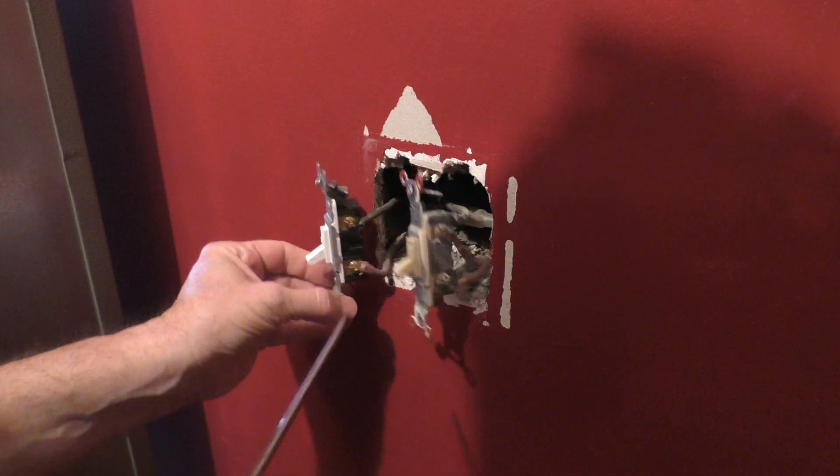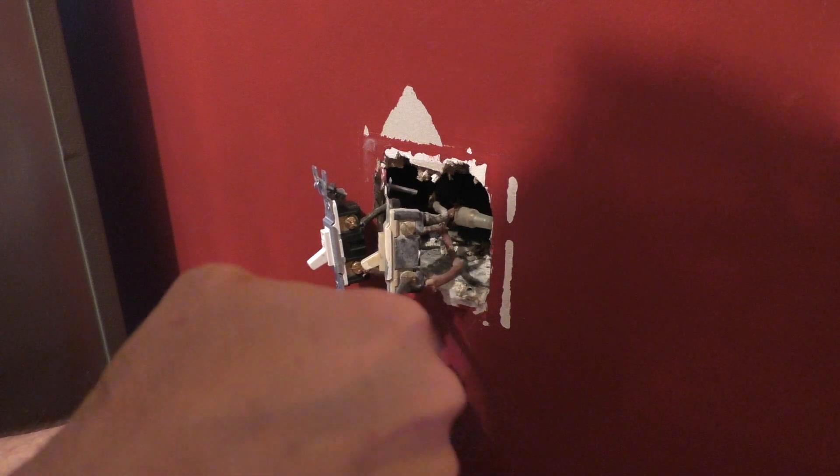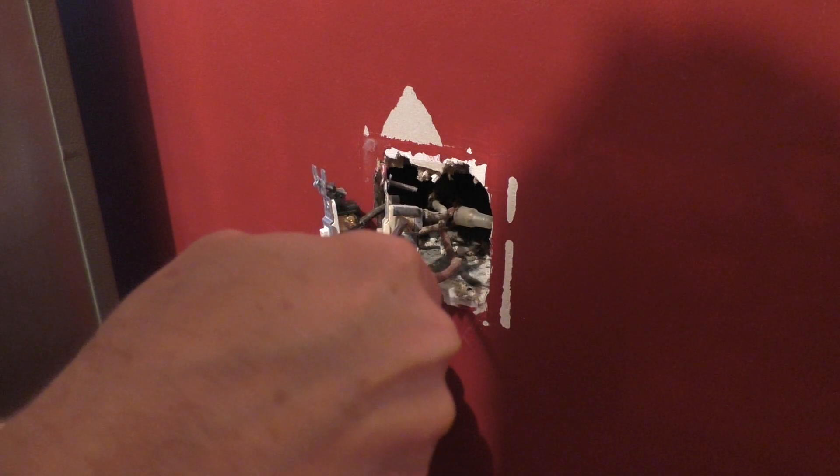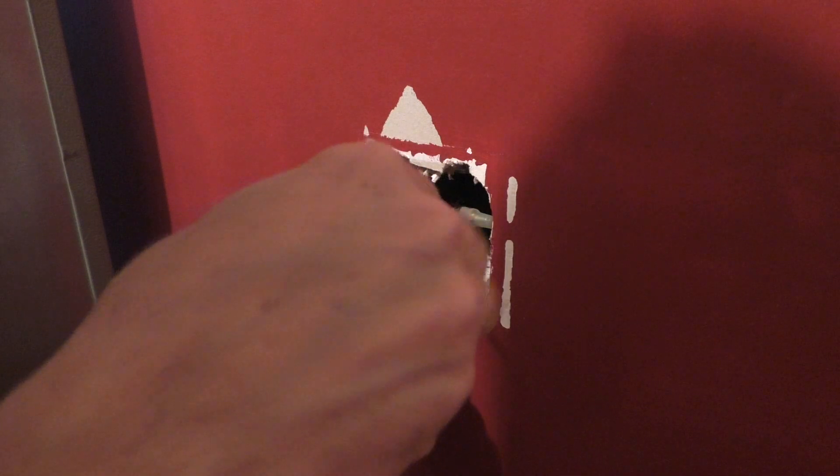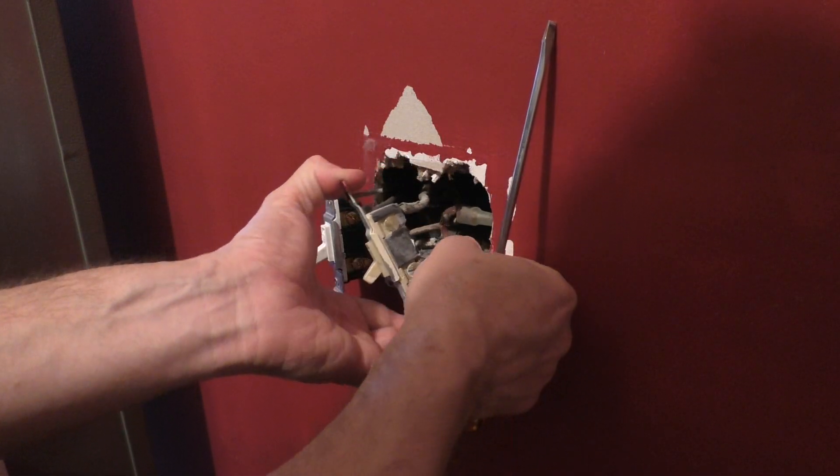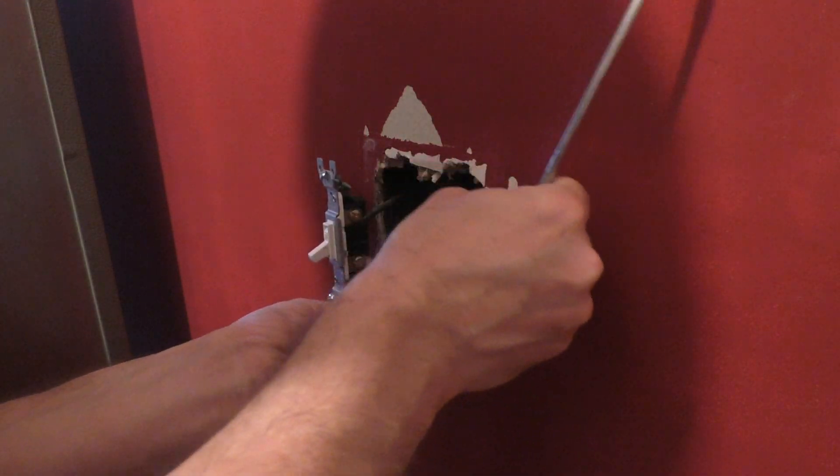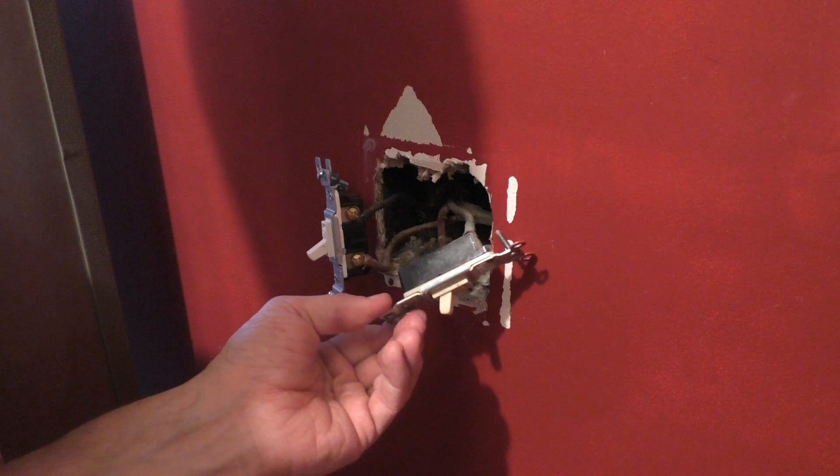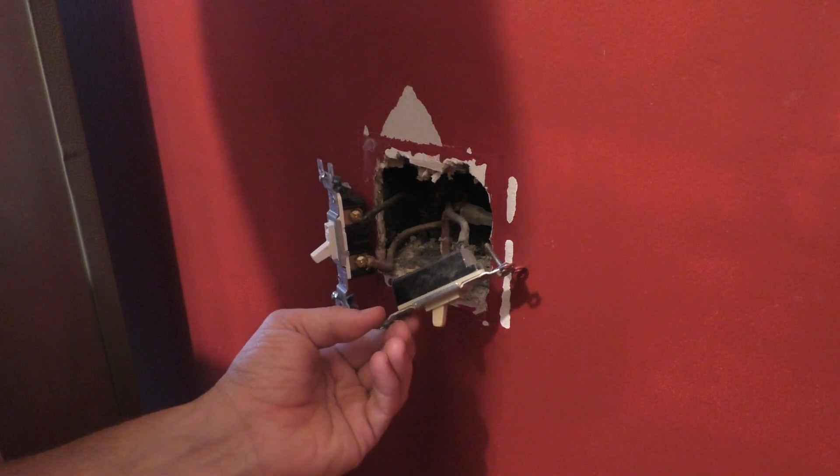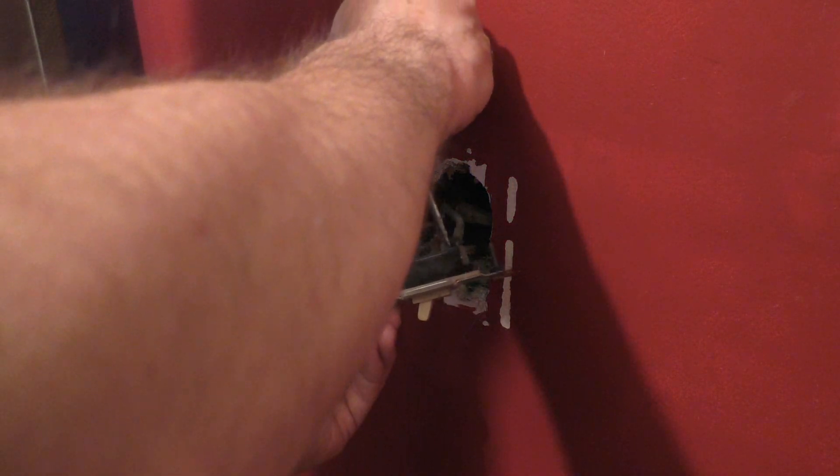With the power turned off again, just take a screwdriver and loosen the screws to the light switch or receptacle and remove the wires. For the right light switch, the wires were actually pushed in using backstabbing, so I had to take a small screwdriver to release the wire using the back slot.